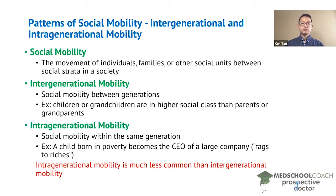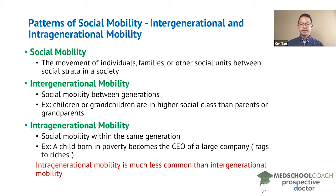Intra-generational mobility is looking at social mobility within the same generation. For example, you can have a child born in poverty who ends up becoming the CEO of a large company. This is often considered the rags-to-riches story.